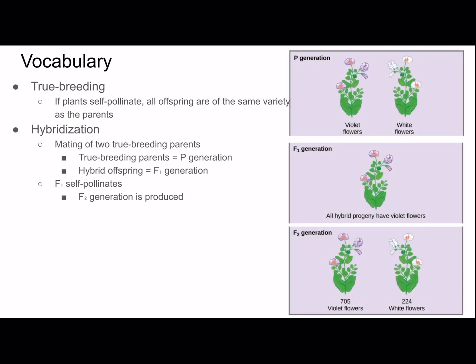Here is an example of an experiment that Mendel did. He started with the P generation, which was two true-bred plants — one had violet flowers and one had white flowers. He mated them together and produced the F1 generation, in which all of them were hybrids and they all had violet flowers. But after the F1 generation was allowed to self-pollinate, the F2 generation actually had about a quarter of them with white flowers. So that's a pretty cool pattern, and we'll be talking about it later in the video.